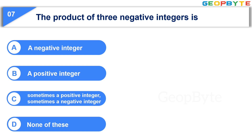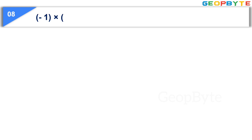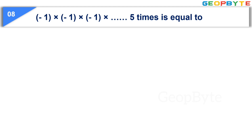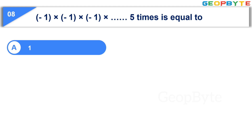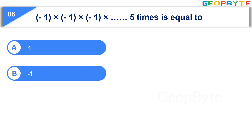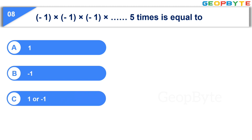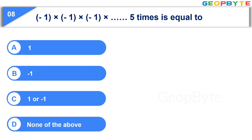Your time is up and the correct answer is Option A: a negative integer. Moving to the next question: minus 1 into minus 1 into minus 1 into minus 1 into minus 1 (5 times) is equal to — Option A: 1, Option B: minus 1, Option C: 1 or minus 1, Option D: none of the above. Your time starts now.